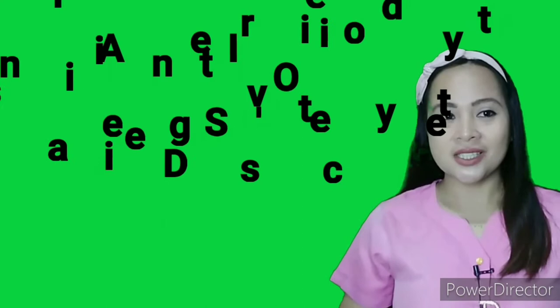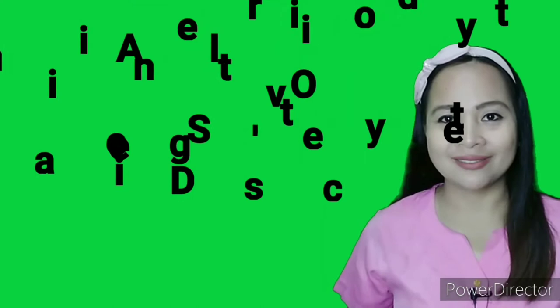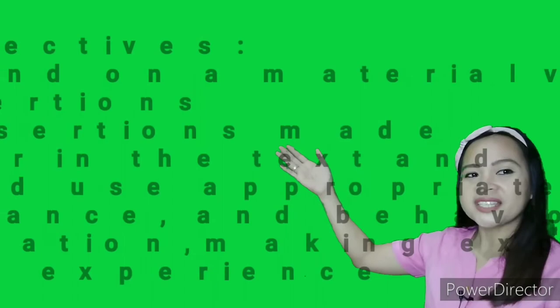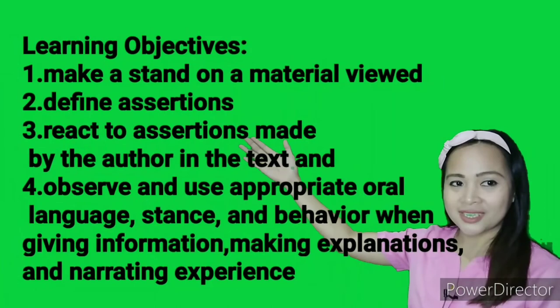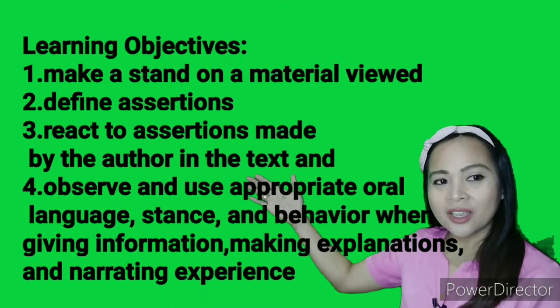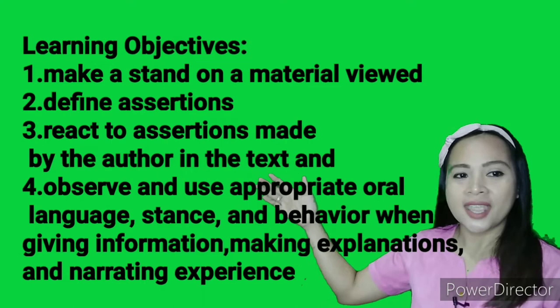For today, your lesson is all about Asserting One's Identity in a Diverse Society. Learning Objectives: Make a stand on the material. Define assertions. React to assertions made by the author in the text. Observe and use appropriate oral language, stance, and behavior when giving information, making explanations, and narrating experiences.